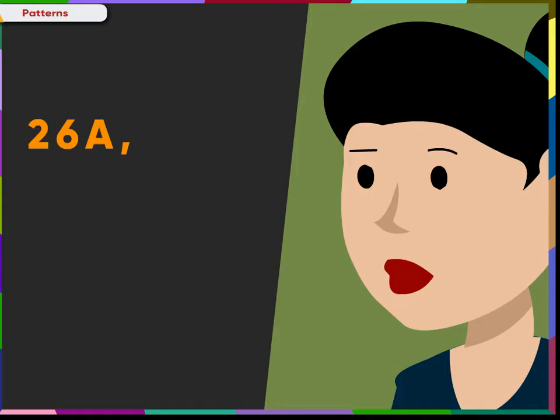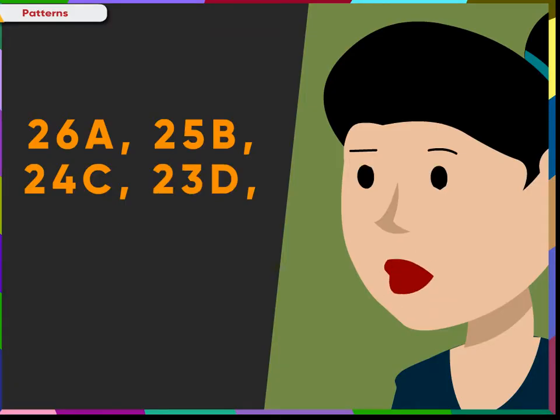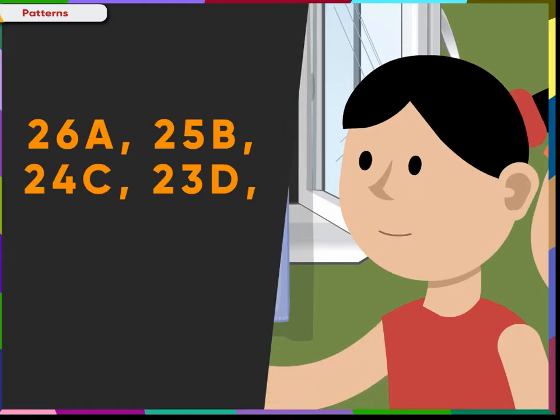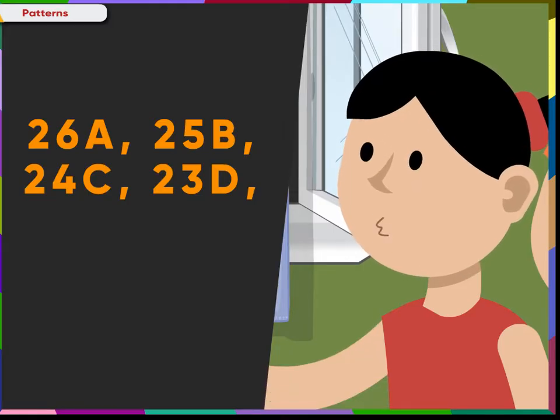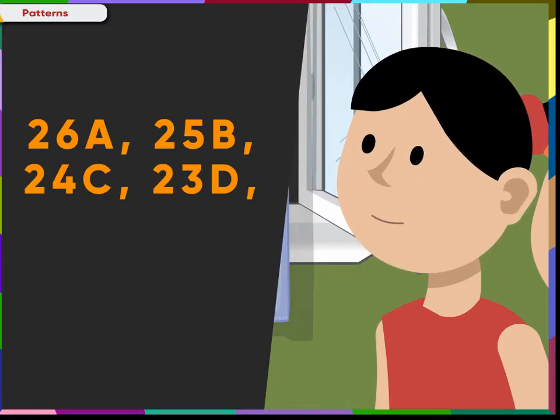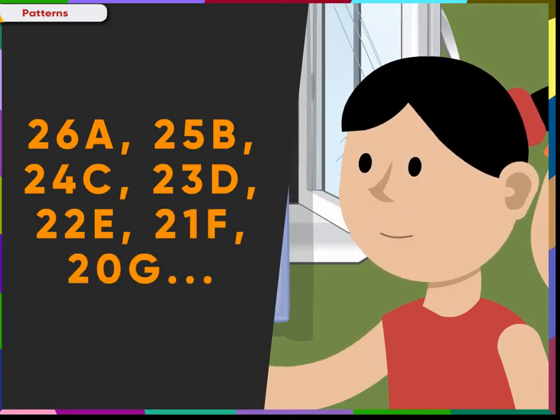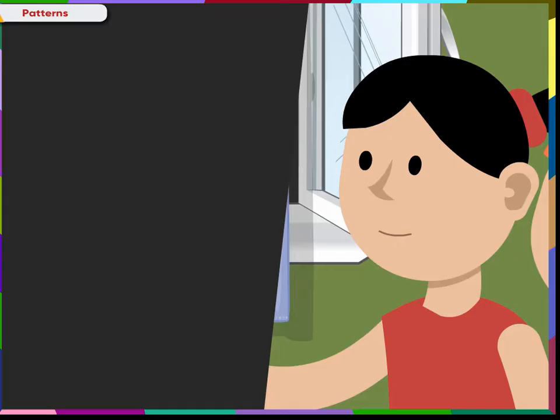Let us now identify the following pattern. It has a letter and a number. Twenty-six A, Twenty-five B, Twenty-four C, Twenty-three D. Here, the rule is twenty-six and A. One minus twenty-six is twenty-five. And the second letter B, Twenty-four and C, Twenty-three and D. So, twenty-two and E, Twenty-one and F, Twenty and G.